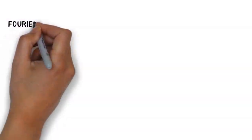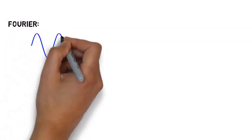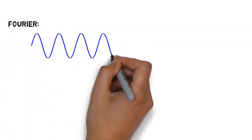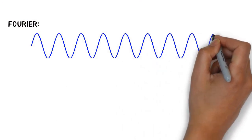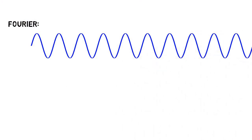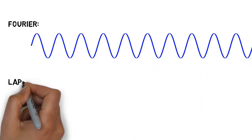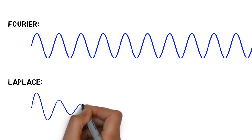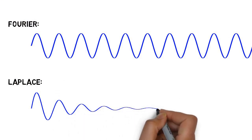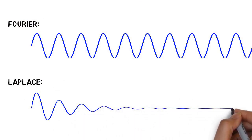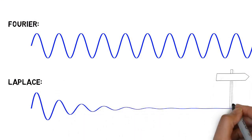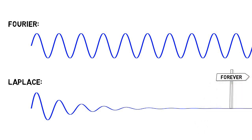This is where a Laplace transform has a distinct advantage. Whereas Fourier assumes that signals are made up of a collection of sine waves with a constant amplitude, Laplace constructs his signals from a collection of decaying sine waves, which decay to nothing, or near enough, long before forever is reached.